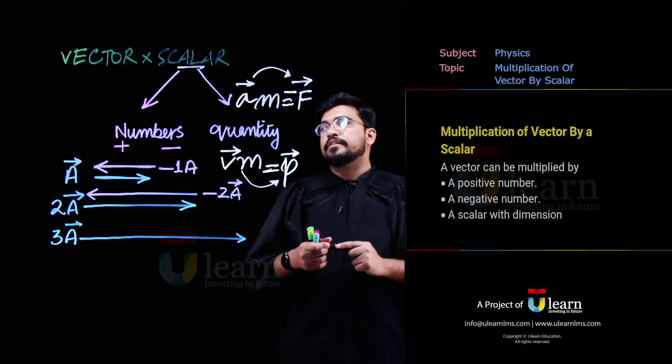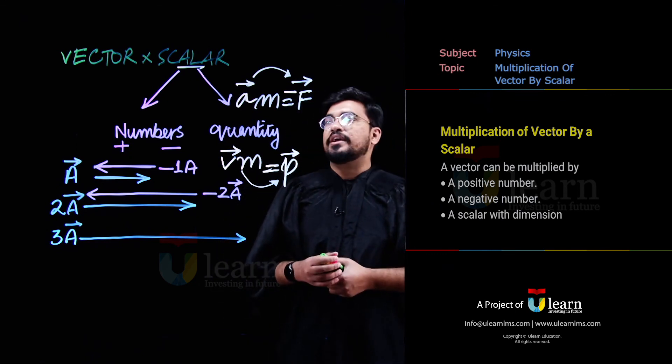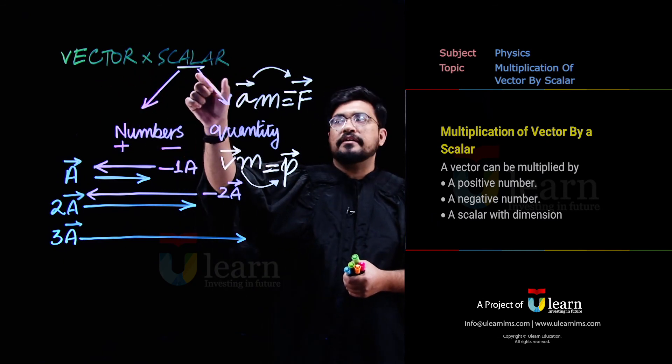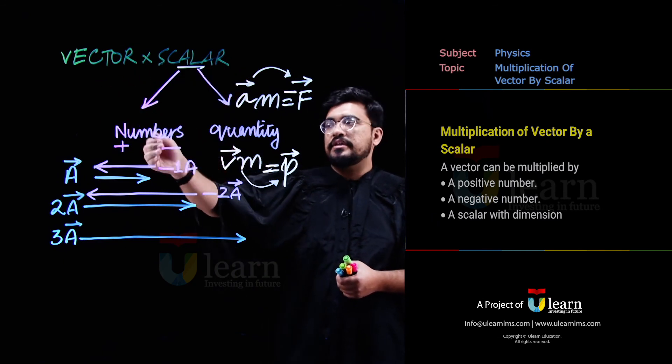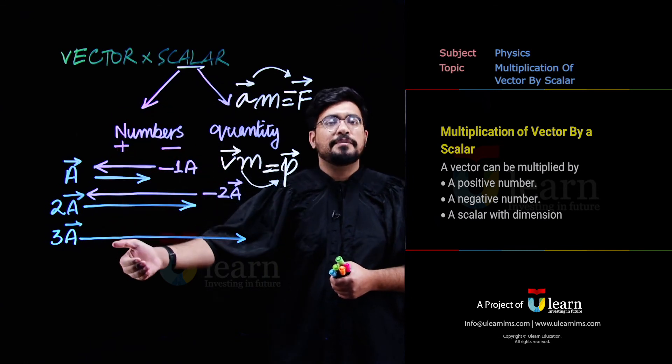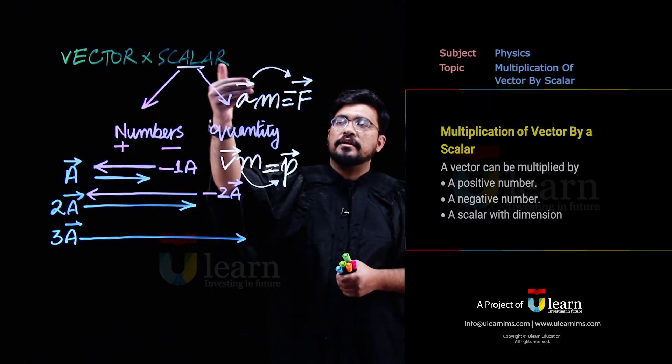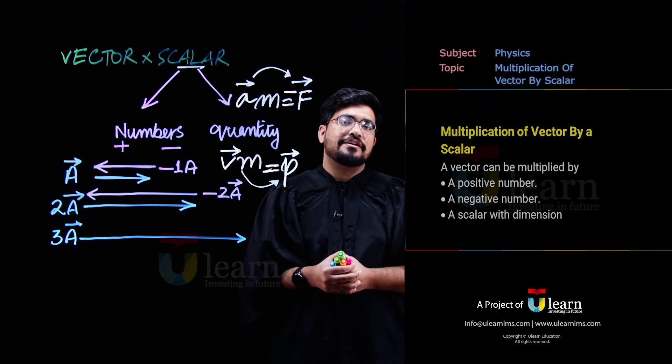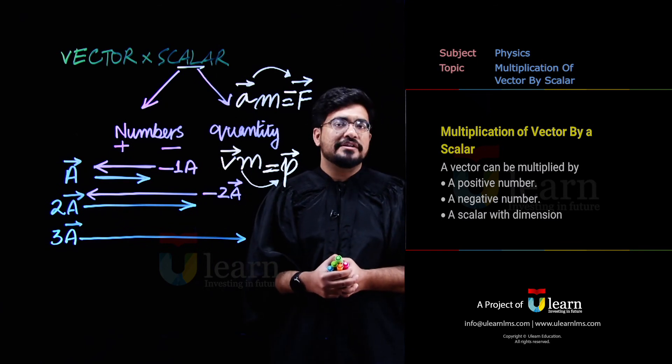Yahaan peh hum ne is lecture ke andar, dono multiplications ko observe kar liya, ki jab ek vector ko ek scalar se multiply karte hai, toh do possibilities ho sakti hai, scalar numbers ke case pe possibilities kya kya hai, aur scalar quantities ke case pe possibilities kya kya hai, dono ko hum ne yahaan pe details se discuss kar liya.